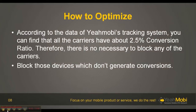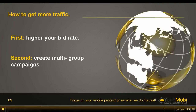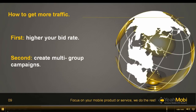In conclusion, according to the data on the mobile tracking system, all carriers have about a 25% conversion ratio. Therefore, there is no need to block any other carriers. You just need to block those devices which don't generate conversions. To get more traffic, raise your bid rates and create multi-group campaigns. This is all for today's EMOBI case study.